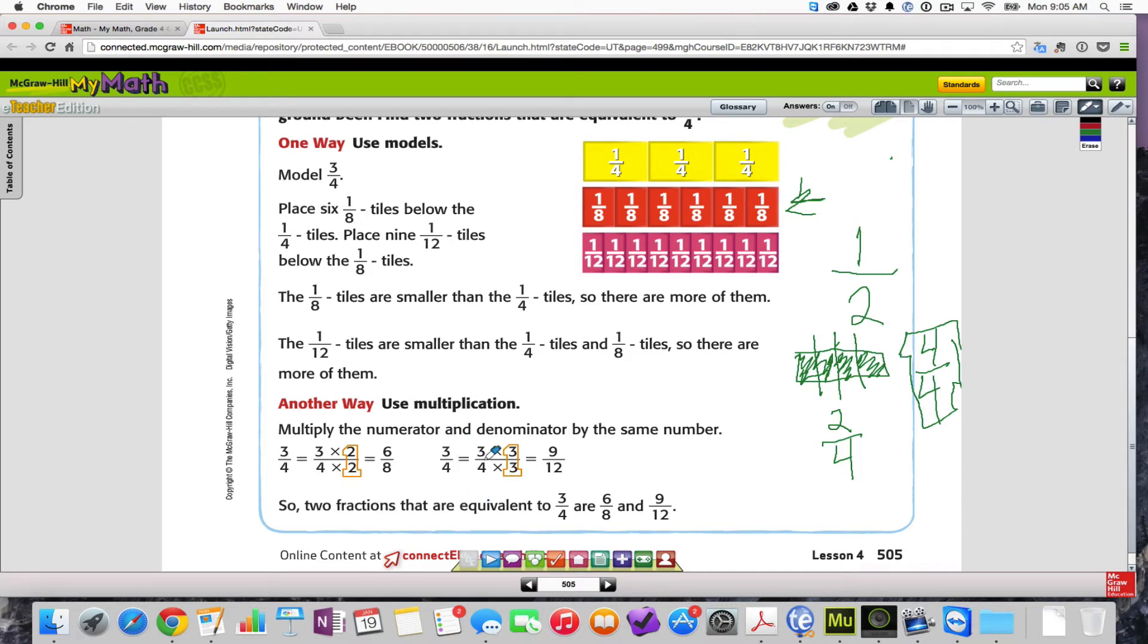Three-fourths times three over three. Three times three is nine. Four times three is twelve. So, nine-twelfths, as you can see up here, is the same as three-fourths. Let's go ahead and go down to the next page.